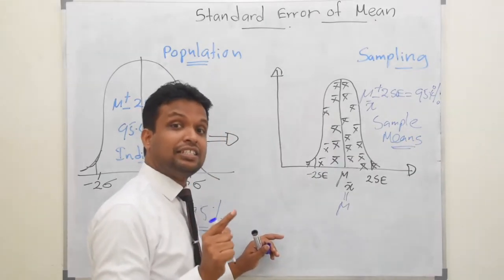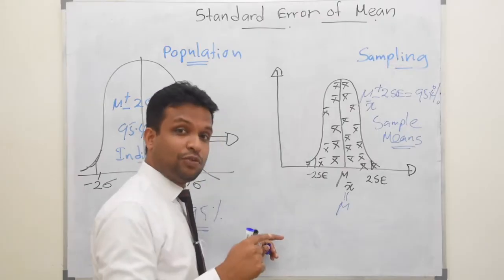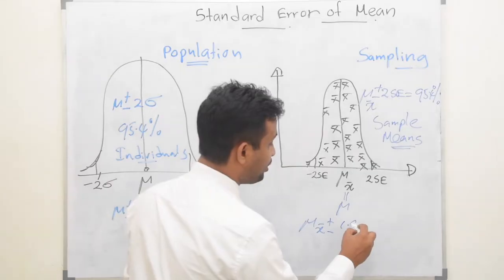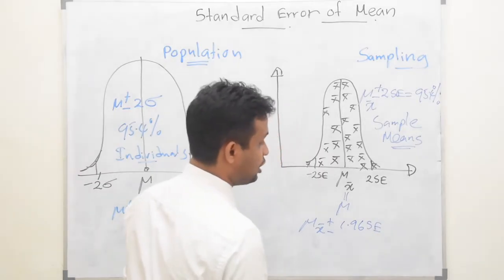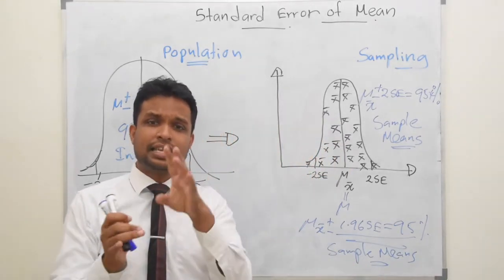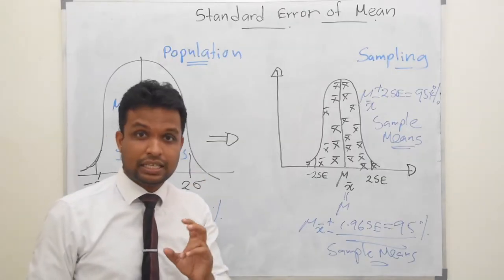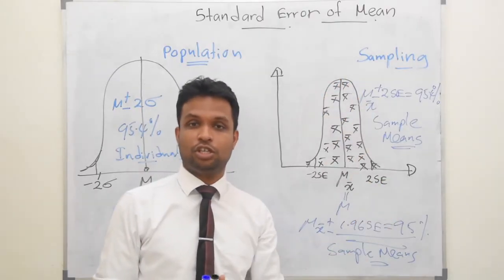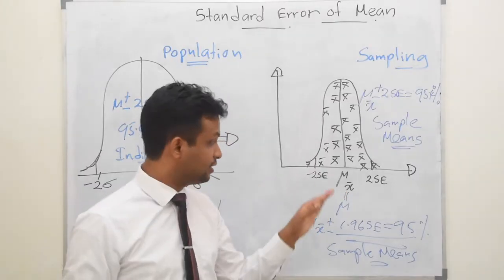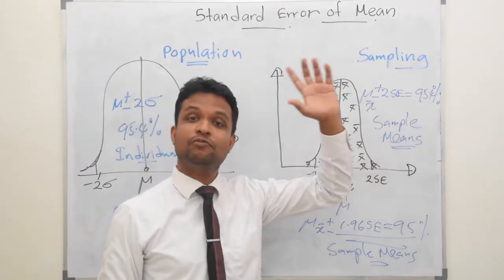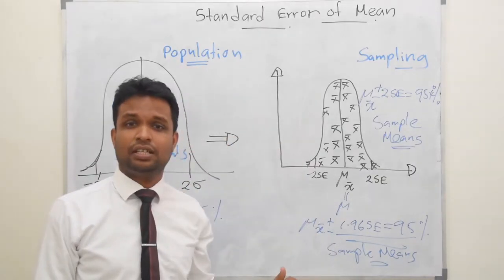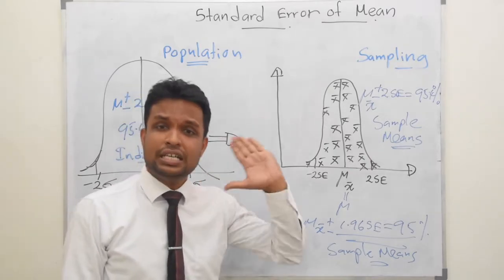As discussed in the lecture on normal distribution, mu x-bar plus or minus 1.96 standard errors will consist of 95% of the sample means in the sampling distribution. So mu x-bar plus or minus two standard errors will consist of 95.4% of the sample means. This concept is really important to proceed to the next few lectures.